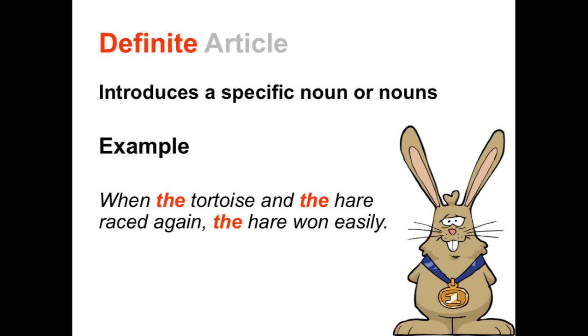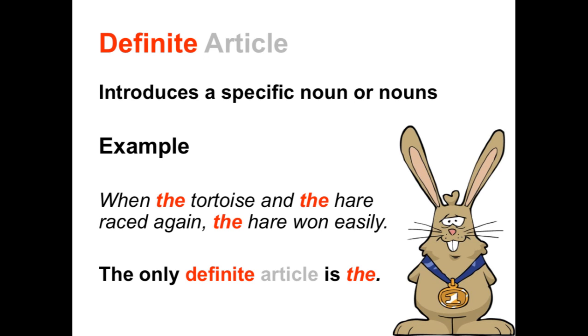The speaker uses an article before every noun in this sentence, and she uses the article 'the' because she is referring to a very specific tortoise and hare. The only definite article in the entire English language is 'the.'